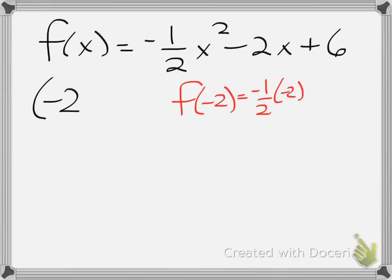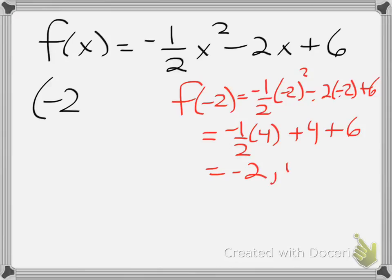That's what the phrase f of opposite of b over 2a means. Whatever you get for the x value, put in for the y value. So f of negative 2 is what I need to find out. So that's negative one half times negative 2 squared, minus 2 times negative 2, plus 6. So that's negative one half times 4. Negative 2 times negative 2 gives me a plus 4, and plus 6. So this gives me negative 1 half times 4 is a negative 2, plus 10, which is 8. So f of negative 2 equals 8, which means now my vertex is the point negative 2, 8.